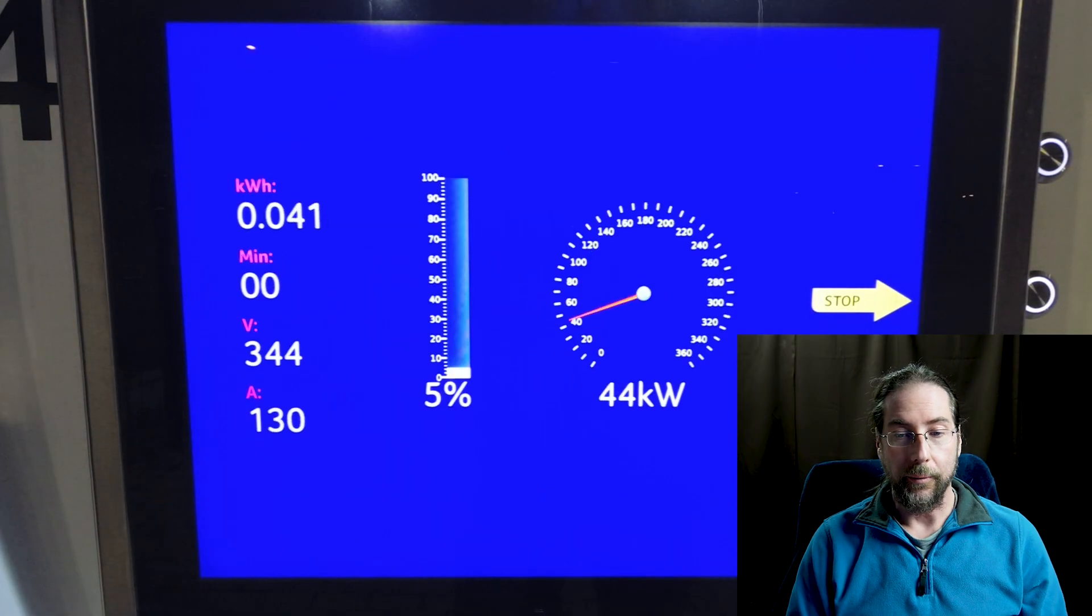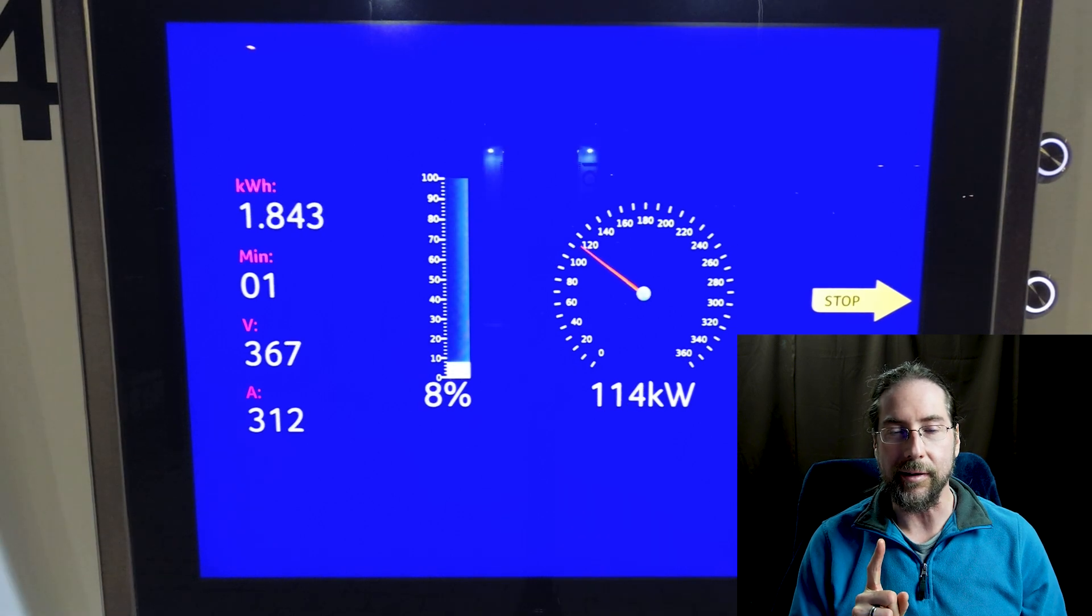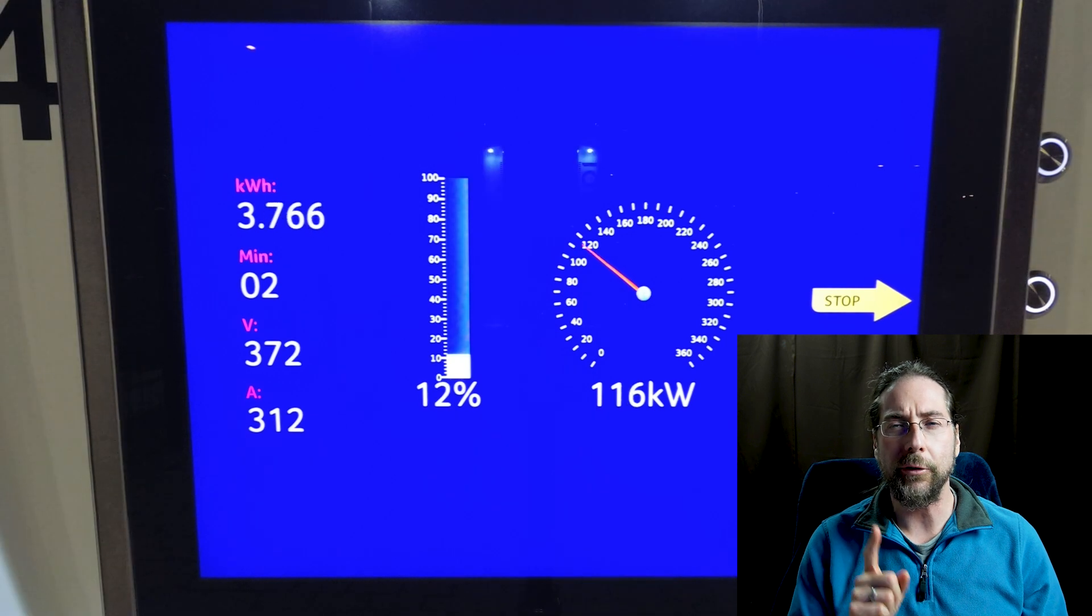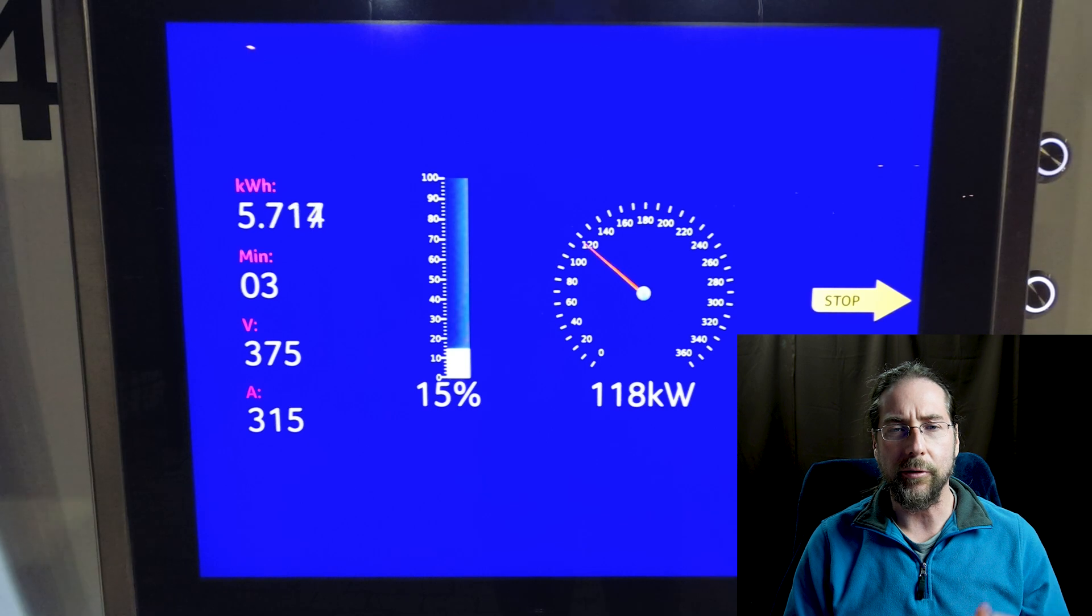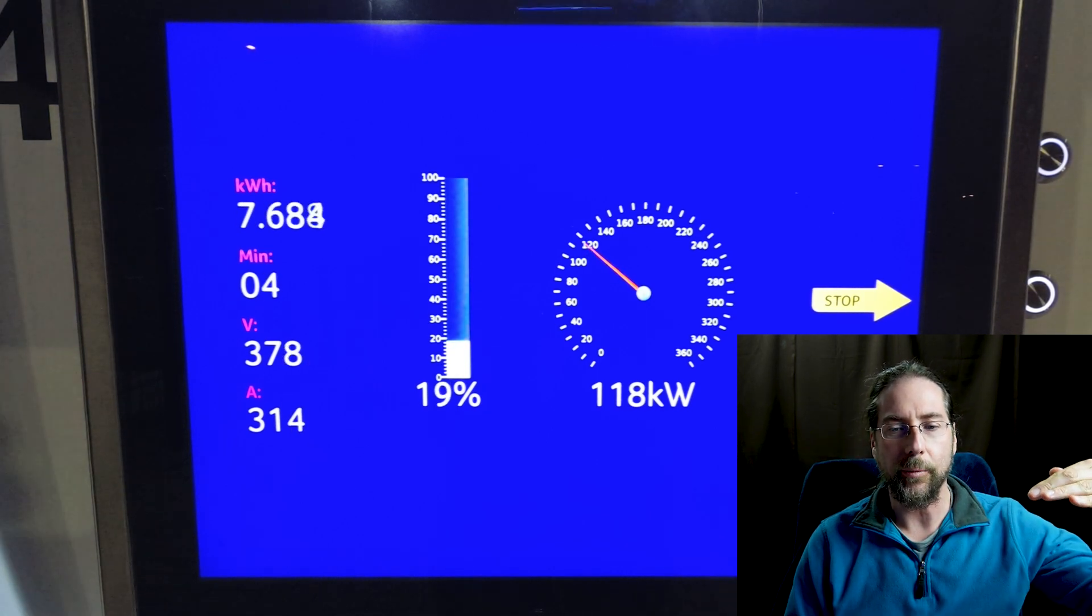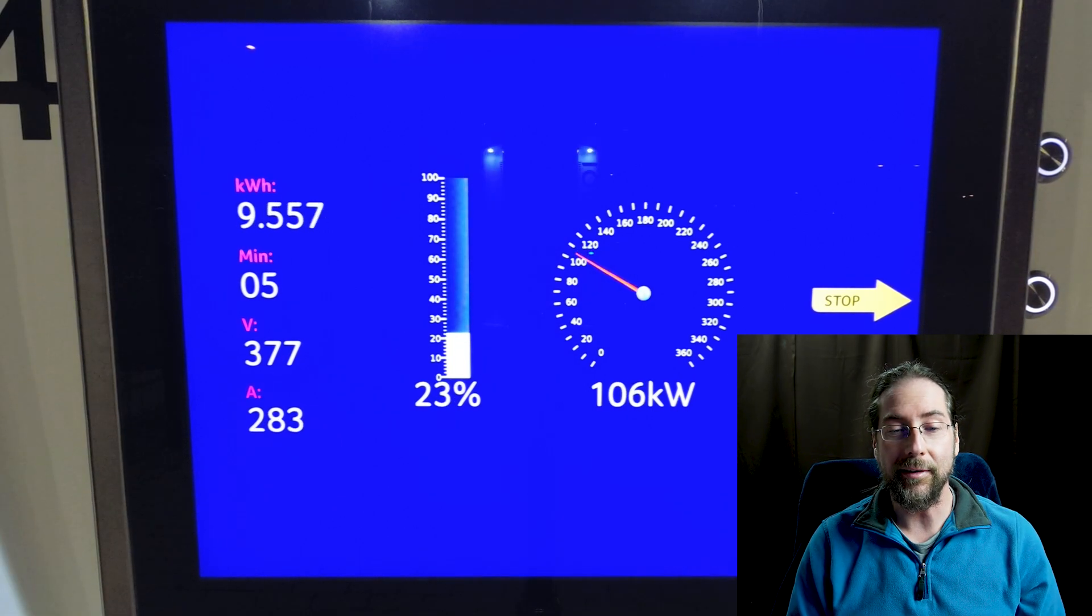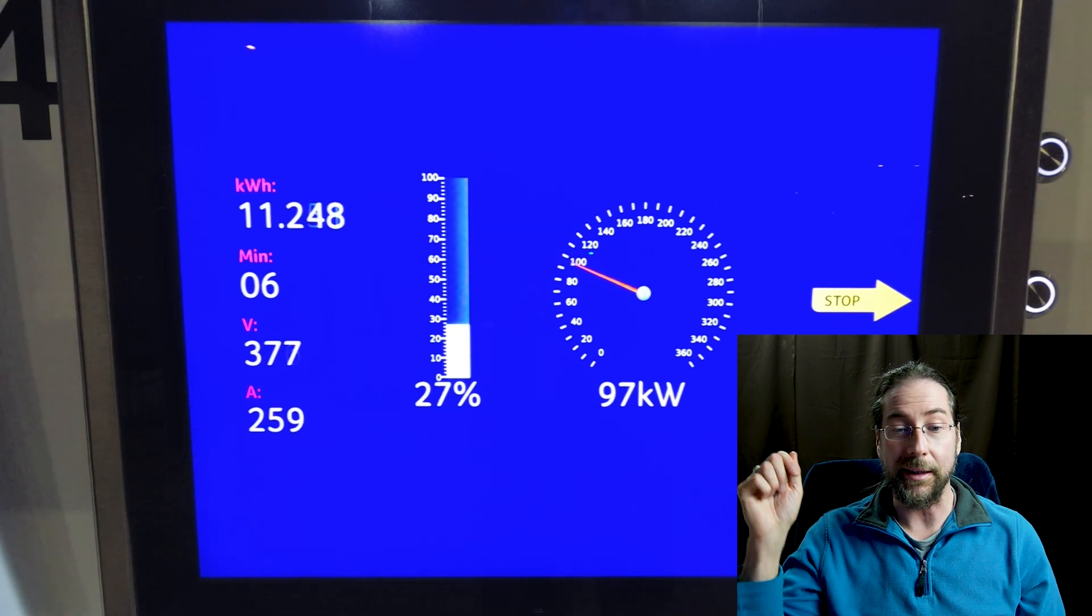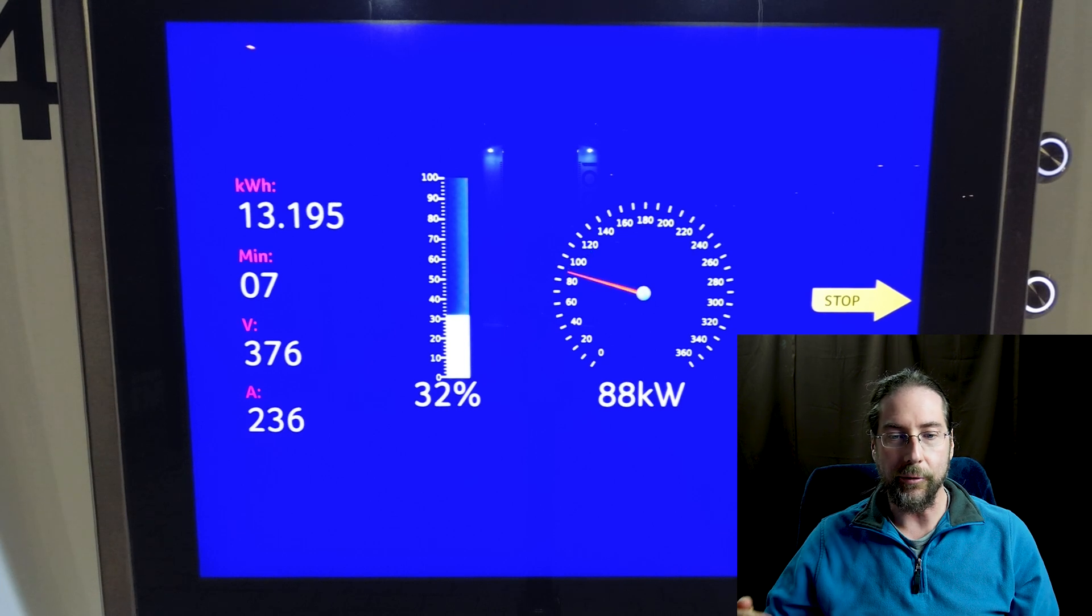There we go, we're starting right away at 112 kilowatt. Then interestingly, not just the voltage goes up, the amps go up too, and it's weird. In other batteries it's usually the amps peak and then the voltage goes up, and that's why you get the higher charging power. As you can see, it was 118 kilowatt peak at around 20 percent.